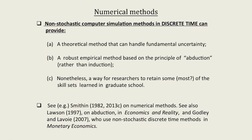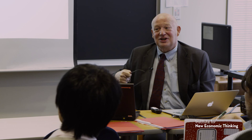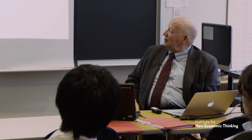What we're going to argue is that non-stochastic simulation methods in discrete time — I put discrete time in capital letters — can provide two things. First, a theoretical method that can handle fundamental uncertainty. It does so in a relatively simple way — it simply adds a parameter for animal spirits or adds a parameter for the state of liquidity preference. Secondly, at least potentially, an empirical method based on the principles of so-called abduction. Abduction is not induction — it's working out what must have happened in the past for such and such a thing to have occurred.